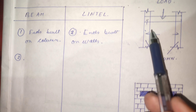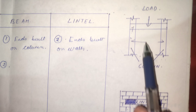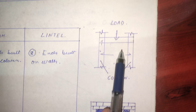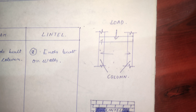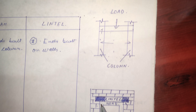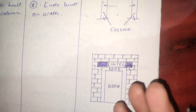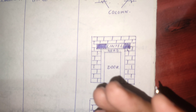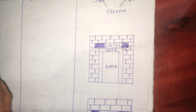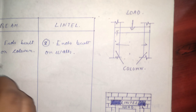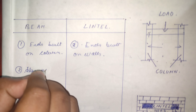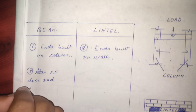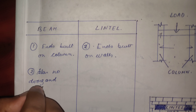A beam distributes or diffuses the loads to the columns. The beam is distributing this load to the columns. In the case of a lintel, a lintel distributes the load of the walls or the bricks to the sides of the walls.